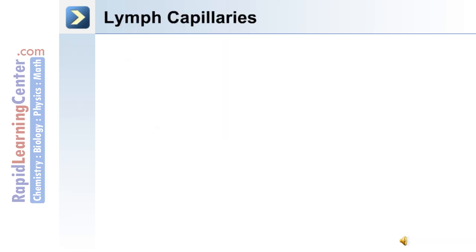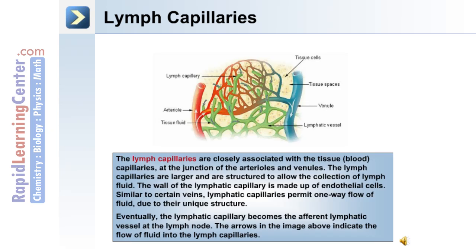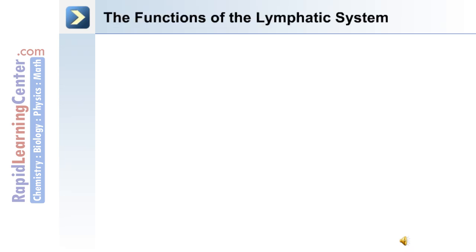The capillaries of the lymphatic system are closely associated with the capillaries of the cardiovascular system. Lymph capillaries are larger and structured to allow the collection of lymph fluid. The wall of the lymphatic capillary is made up of endothelial cells, and similar to certain veins, these capillaries permit one-way flow of fluid due to their unique valve-like structure. Eventually, the lymphatic capillary becomes the afferent lymphatic vessel at the lymph node. The arrows in this image indicate fluid flow from the tissue space into the lymph capillaries.